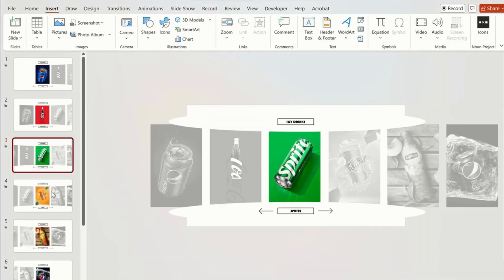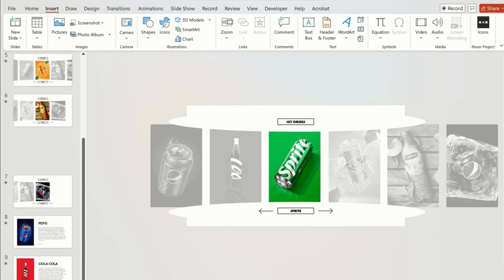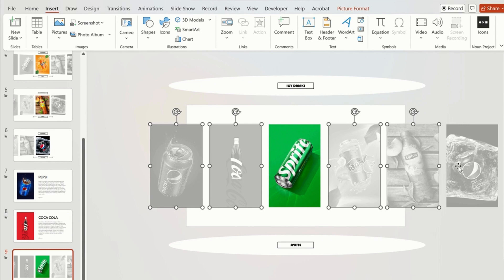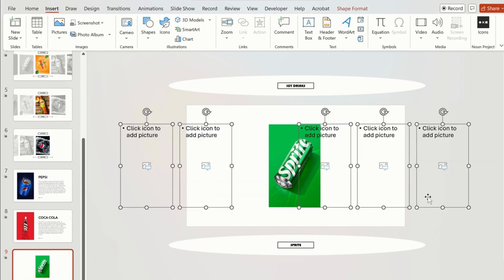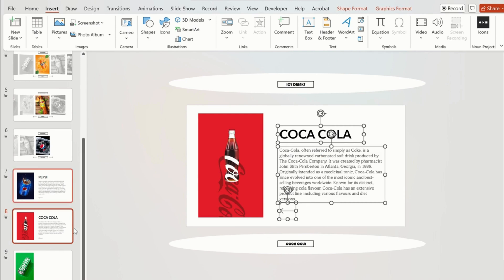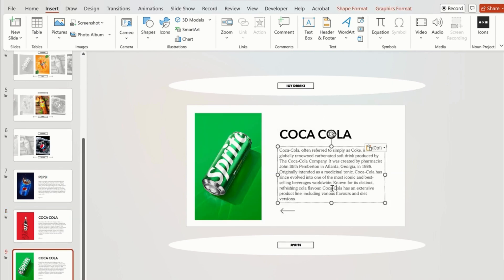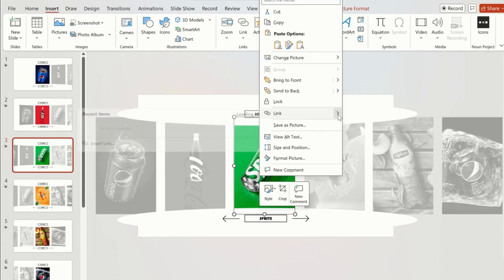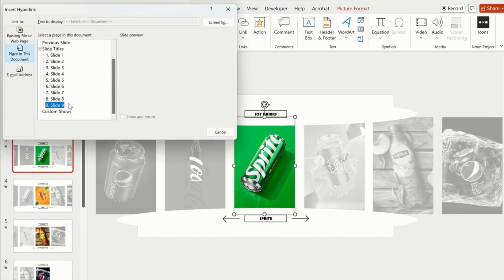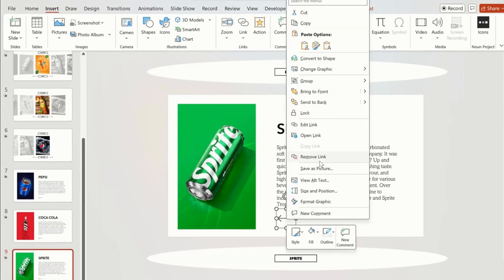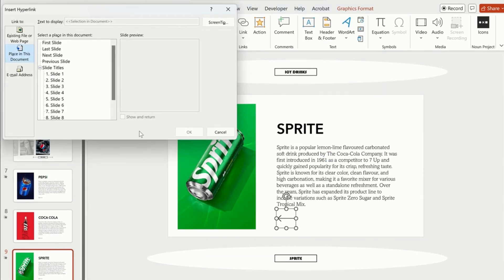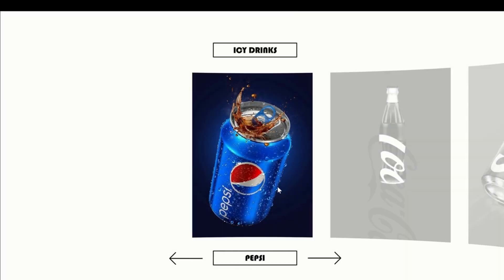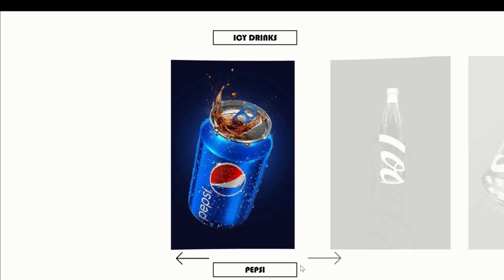Now create a duplicate of the third slide and move it below the Coca-Cola description. Move the ellipse shape and remove the images and placeholders as shown. Copy the text from the previous slide and paste it. Now go to the third slide, click on the Sprite image, and add a link to Slide 9. Go back to Slide 9, first remove the link, then apply the link of Slide 3. All slides are perfectly linked together.